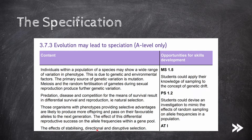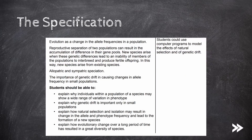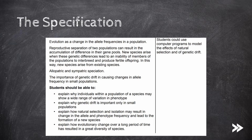This part of the specification then just adds disruptive selection, which I'll cover in just a moment. The specification also moves on to how evolution is a change in the allele frequencies in a population, and how reproductive separation of two populations can result in the accumulation of differences in their gene pools. This leads on nicely to speciation, and the specification mentions allopatric and sympatric speciation in particular. Finally, the specification wants us to know about the concept of genetic drift in causing changes in allele frequency in small populations. So just to summarise, this part of the specification is basically just a little development on things that we have already learnt before.